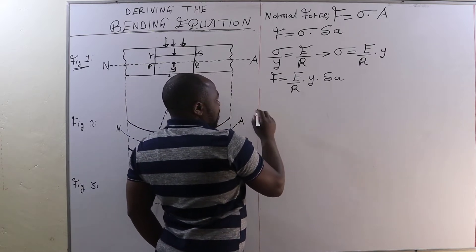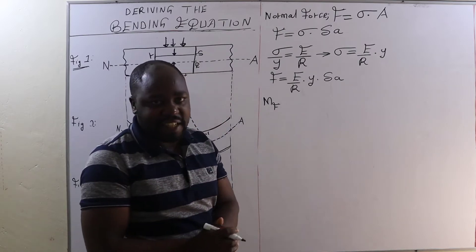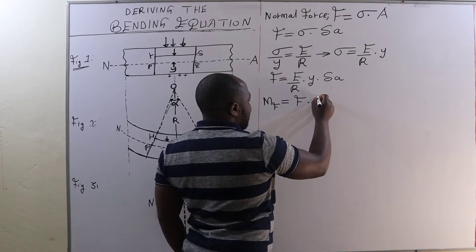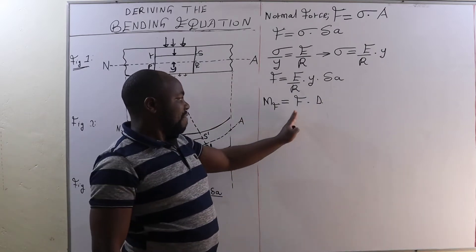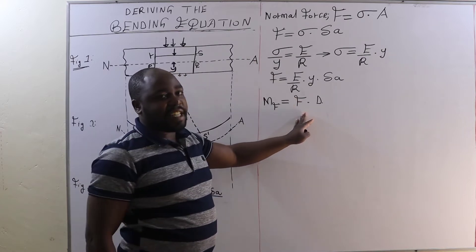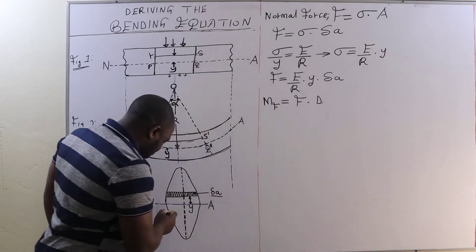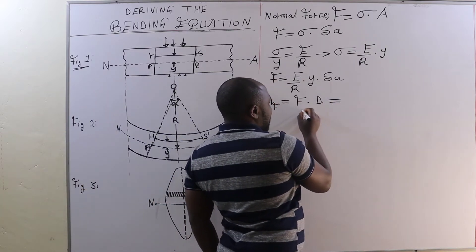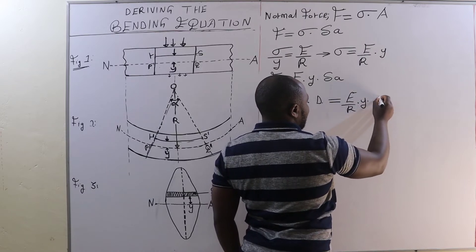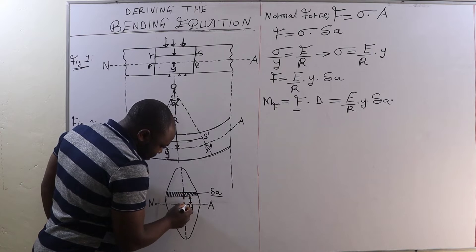Now, the moment of force about the neutral axis will be given by force multiplied by distance. Remember, moment is given by force times distance from the point of action of the force up to a point under consideration. Therefore, the moment of force about the neutral axis is given by the force — which in this case is E over R times Y times the area of the elemental strip — multiplied by the distance Y from the elemental strip to the neutral axis.